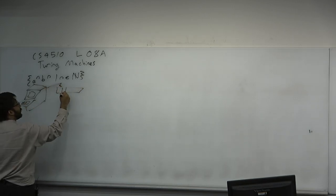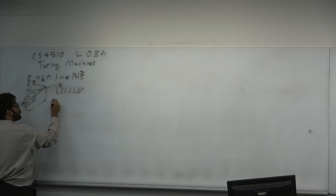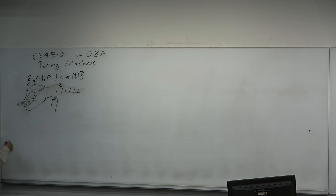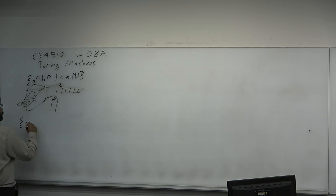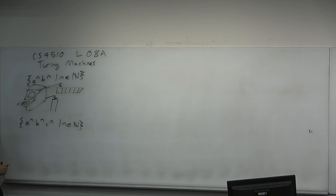The PDA has input it can read — it can only move left and right and read. There's also a stack, which is unbounded, that it can push and pop from, and it can only read the top of the stack. So we took a DFA and gave it an auxiliary memory structure. Given this, it was able to decide A^N B^N.